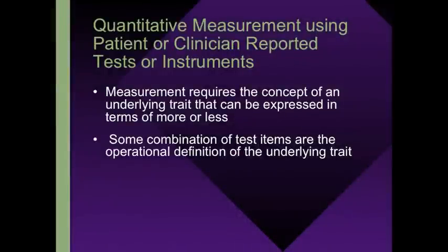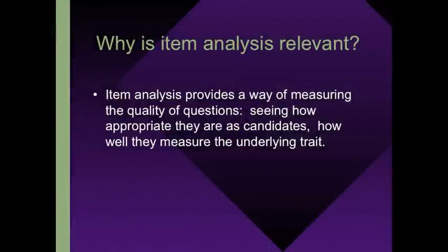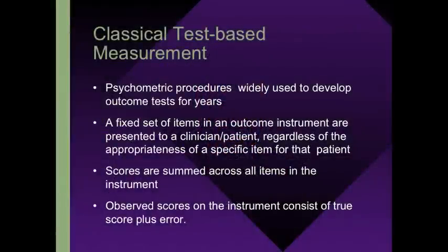So, quantitative measurement—my focus will be on quantitative, not qualitative measurement. That's important to understand because the principles of IRT and CAT only apply when it's quantitative measurement that you're after, and not when you're looking at nominal approaches to measurement. It requires that we have an underlying concept that we're trying to measure and we want to express something about that trait in terms of more or less—the quantitative aspects. Item analysis, which is what we spend a lot of our time doing, is a way of understanding and measuring the quality of the questions that we come up with for the various tests and measures that we develop.